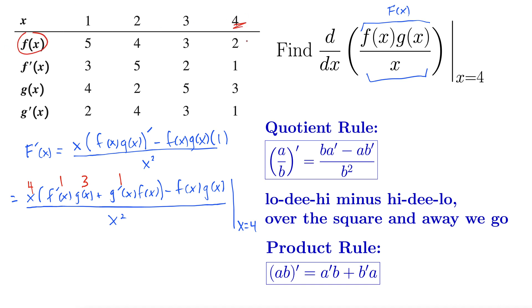Minus f of 4 which is 2 again times g of 4, g of 4 which is 3, and then of course here we have x squared so this whole thing becomes 4 squared.